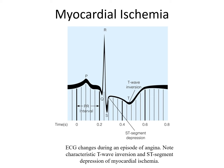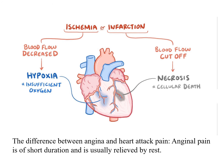Is the chest pain a result of ischemia or infarction? Ischemia is a result of decreased blood flow that results in hypoxia or insufficient oxygen being delivered to the myocardial tissue. On the other side, infarction occurs when the blood flow is not simply decreased but cut off completely.